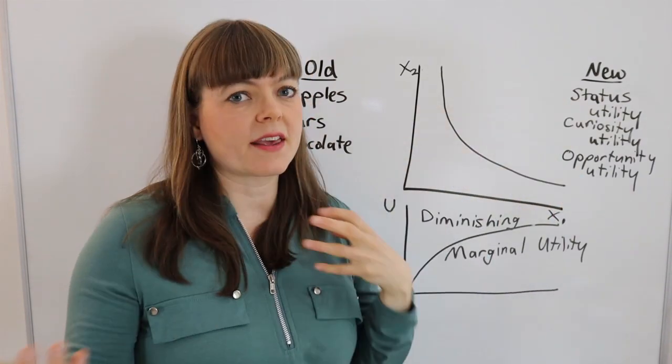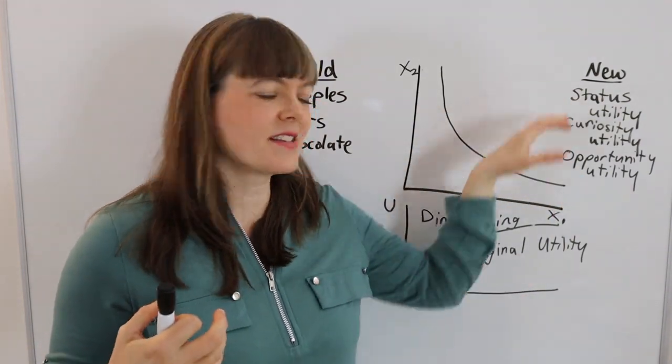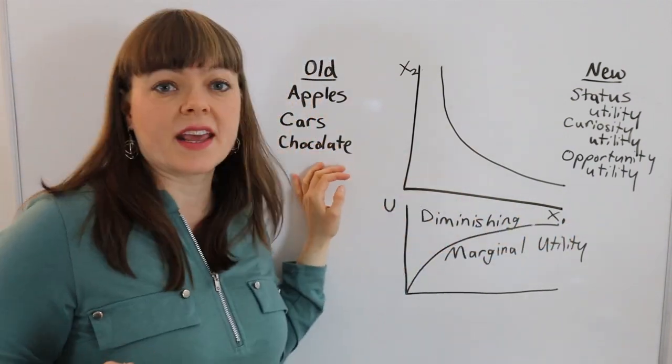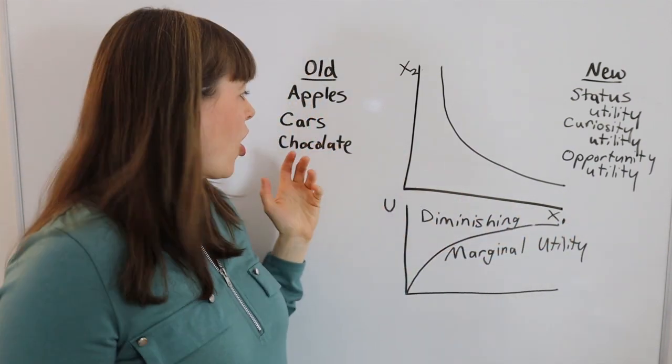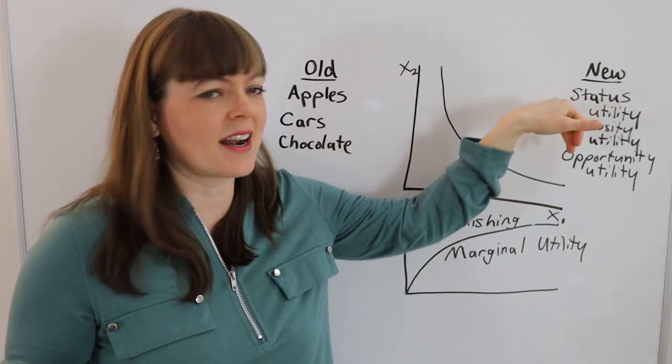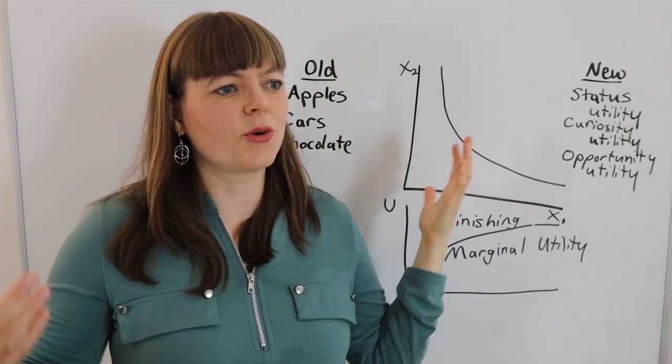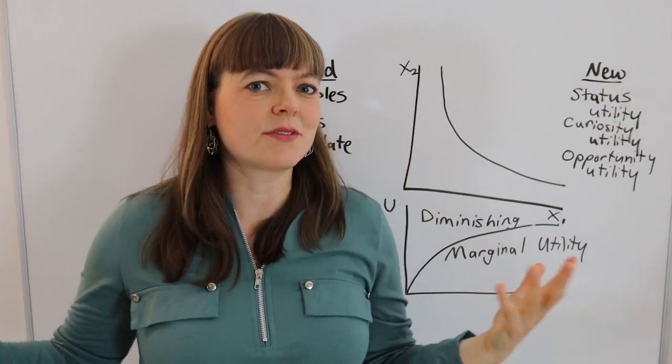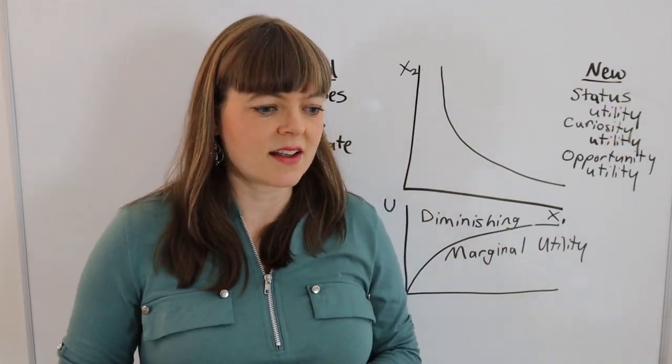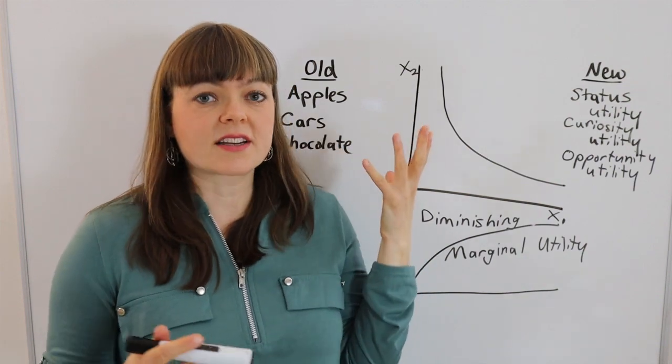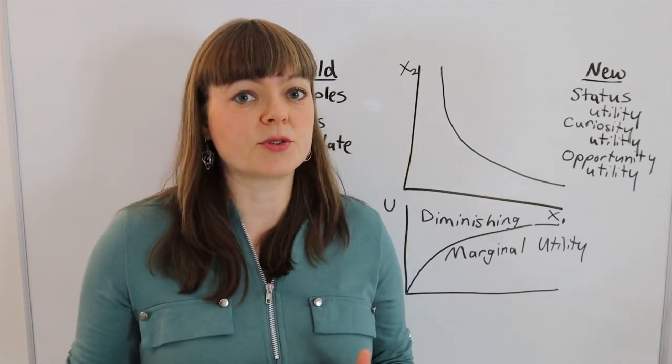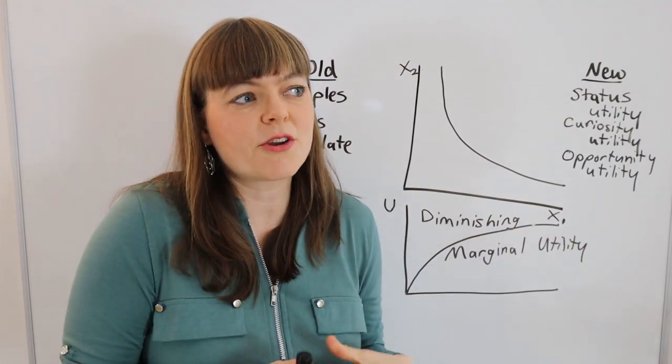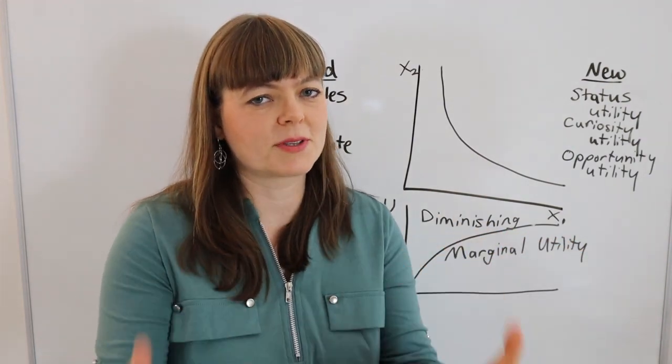If we think of what we're getting from something as being different types of utility, which can be contained within a certain thing. Like cars, of course, cars bring you status utility, they bring you practical utility, and we could sort of make a really long list of the types of utility that humans get. But any one product can actually bring you multiple types of utility, and it's that type that diminishes at the margin rather than more of the certain specific item.